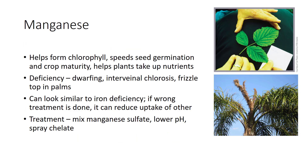Manganese resembles iron in that weathering releases a cation that is tied up in non-acid soil. Manganese acts with iron in the formation of chlorophyll. Manganese speeds seed germination and crop maturity and helps plants take up several other nutrients. Manganese deficiencies are usually seen on calcareous soils or on soils that have been over-limed. Dwarfing is a common symptom of manganese deficiency, accompanied by interveinal chlorosis of middle to younger leaves.